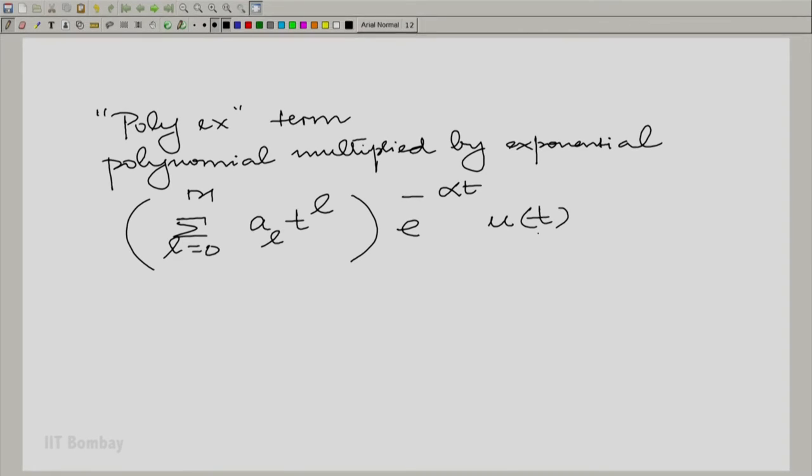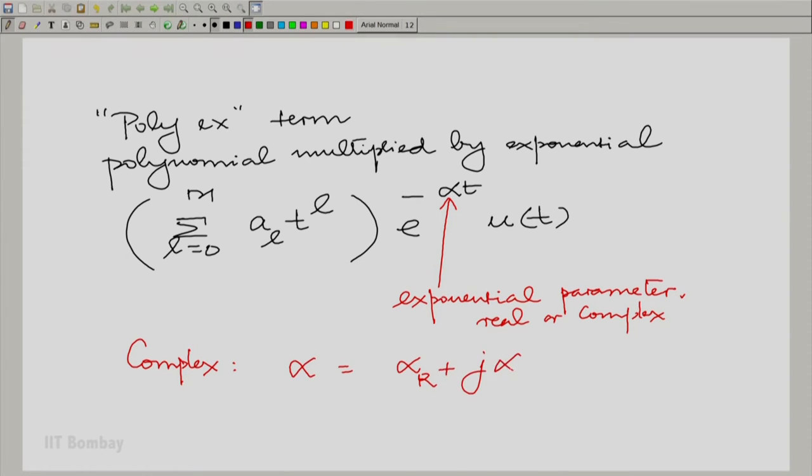Now, there are several variations here. One is that alpha is called the exponential parameter which can be real or complex. If it is complex, then it has a real part and imaginary part, or magnitude and phase. In the context of continuous time, we will think of it as real part and imaginary part. So alpha is alpha_r plus j alpha_i. The alpha_i part would give you a complex part in the expression.